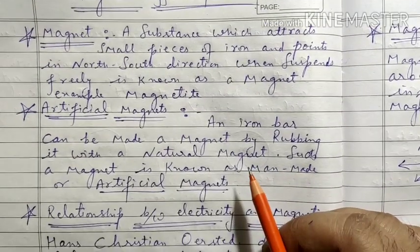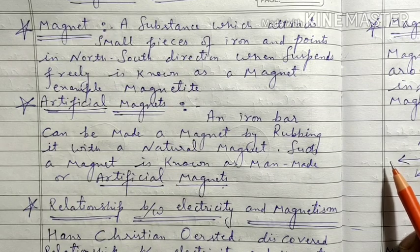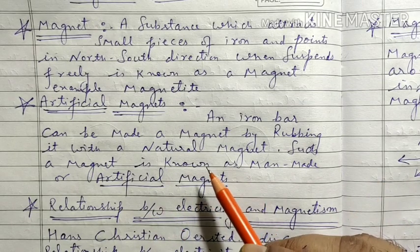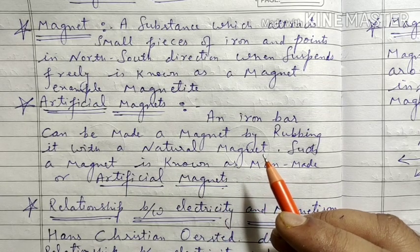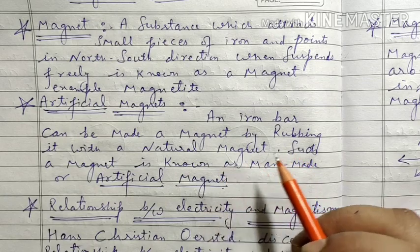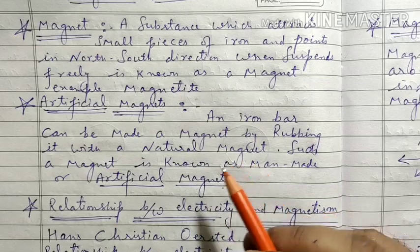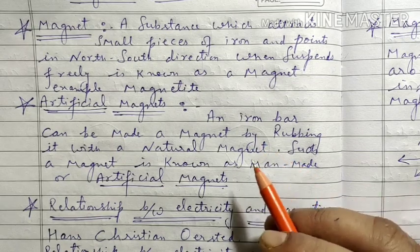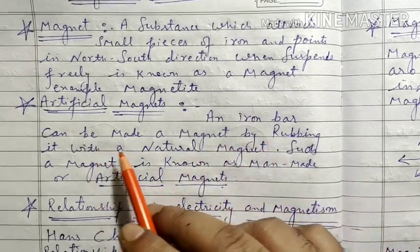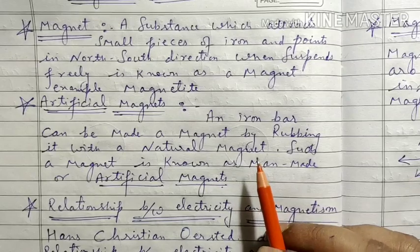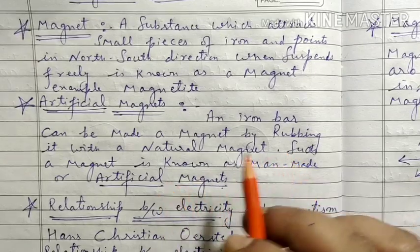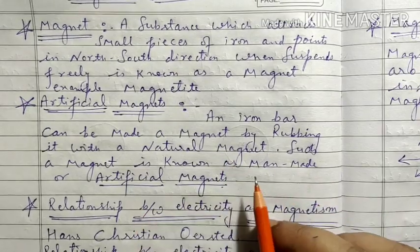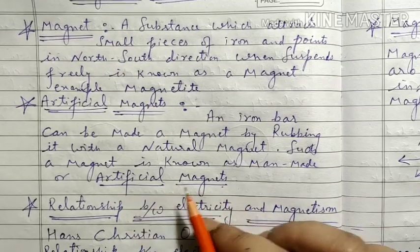Next we have Artificial Magnets, also known as Man-made Magnets — which is not natural, which is made by man. When we rub a piece of iron on a natural magnet again and again in the same direction, that iron piece acquires magnetic properties and behaves as a Magnet. Such a magnet is known as a Man-made Magnet or Artificial Magnet.